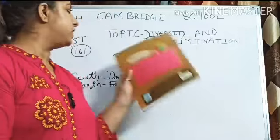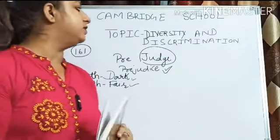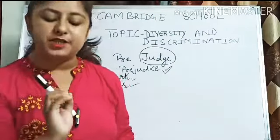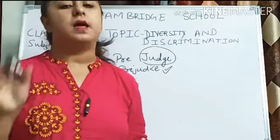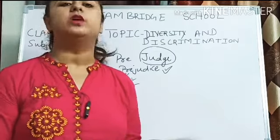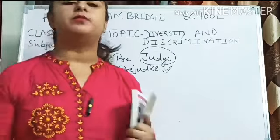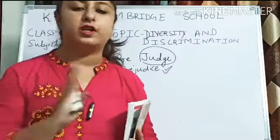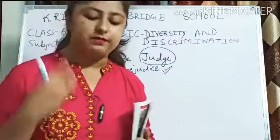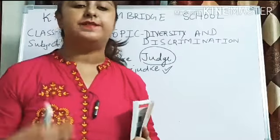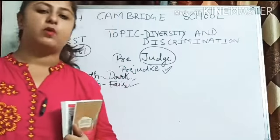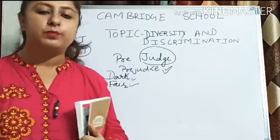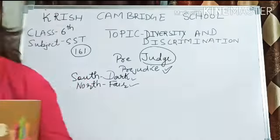So today this was your chapter — Diversity and Discrimination. We discussed some important topics: prejudice and stereotype, what they mean, and how they operate in society. These are very important — you will write about prejudice, stereotype, what both things are, and give some examples. Thank you students so much for attending this class. I hope you really enjoyed it. Thank you again.